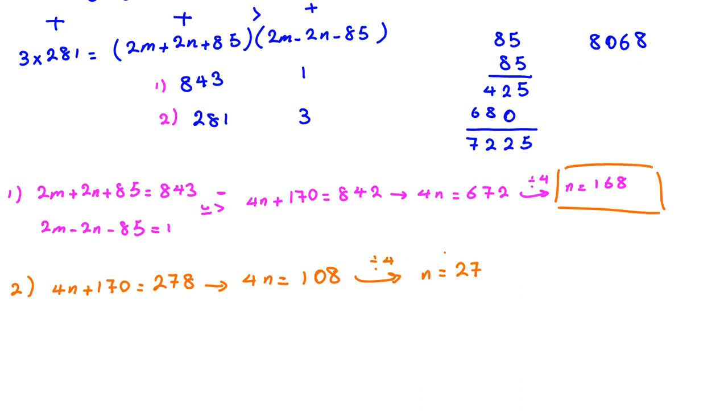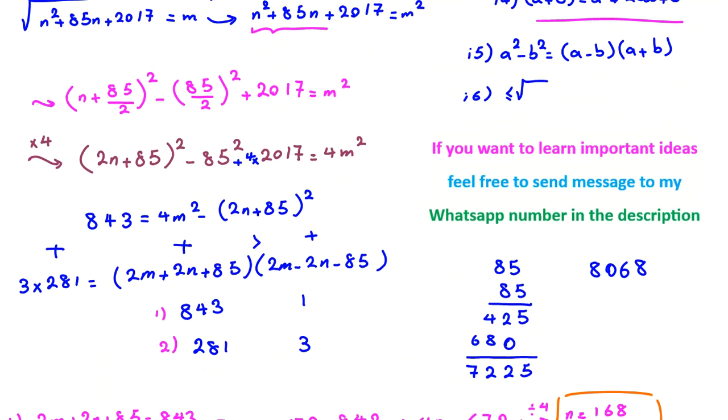So first answer is 168, second answer is 27. So our answer will be what? 168 plus 27. 7 plus 8 is 15, we have 1, 6 plus 2 is 8 plus 1 is 9. 195. So we solved also this problem.